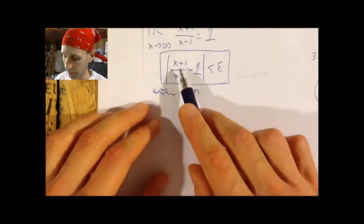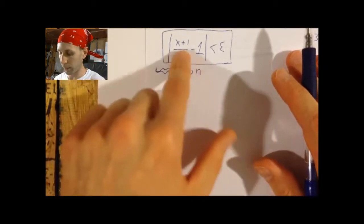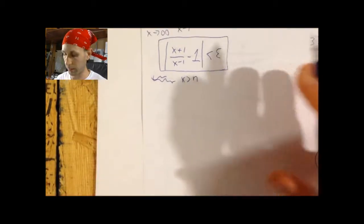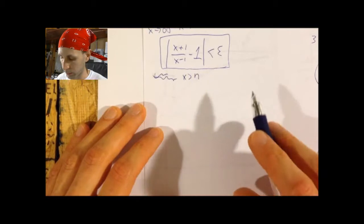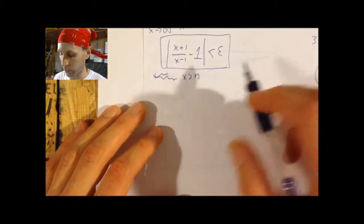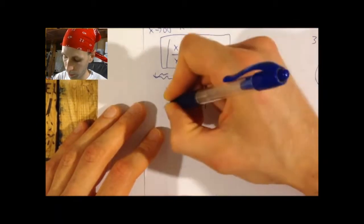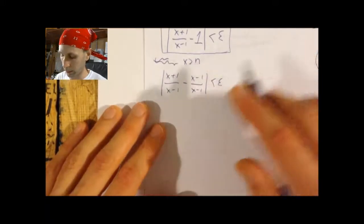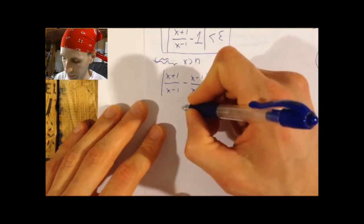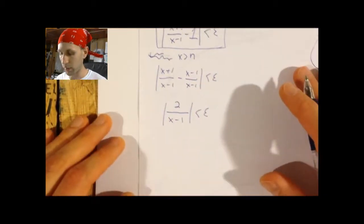We'll start with the forwards-backwards kind of treatment. We have multiple instances of x here so it's going to be a little bit harder, but not too much harder. All we have to do is play around with this and try to massage it. So we start with what we want to prove and play around with this absolute value expression. This statement is equivalent to taking the fractions: x+1 over x−1 minus x−1 over x−1. The x's cancel and the 1's combine to give 2 over x minus 1, absolute value, less than epsilon. And now I'm in good shape because I only have one x left.